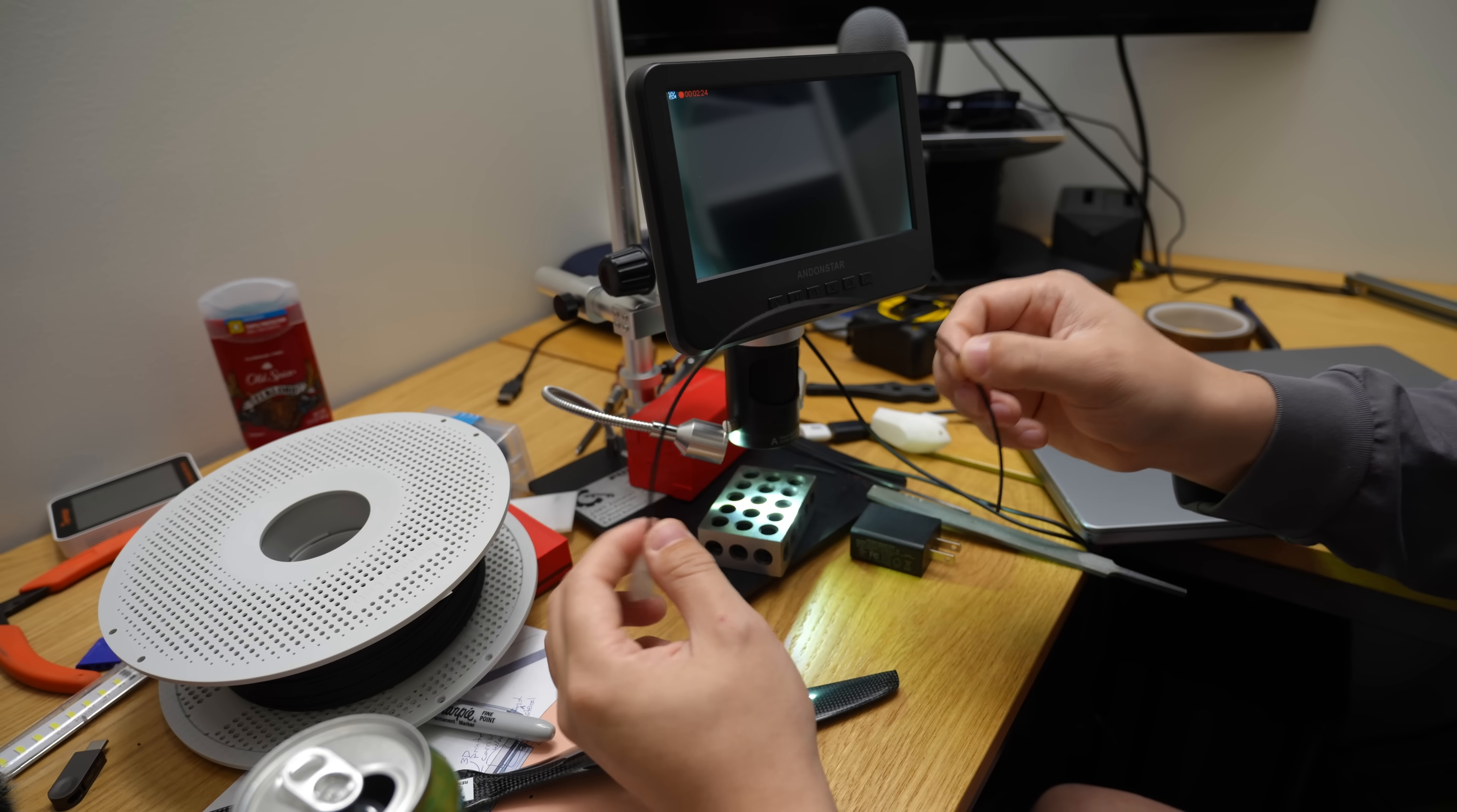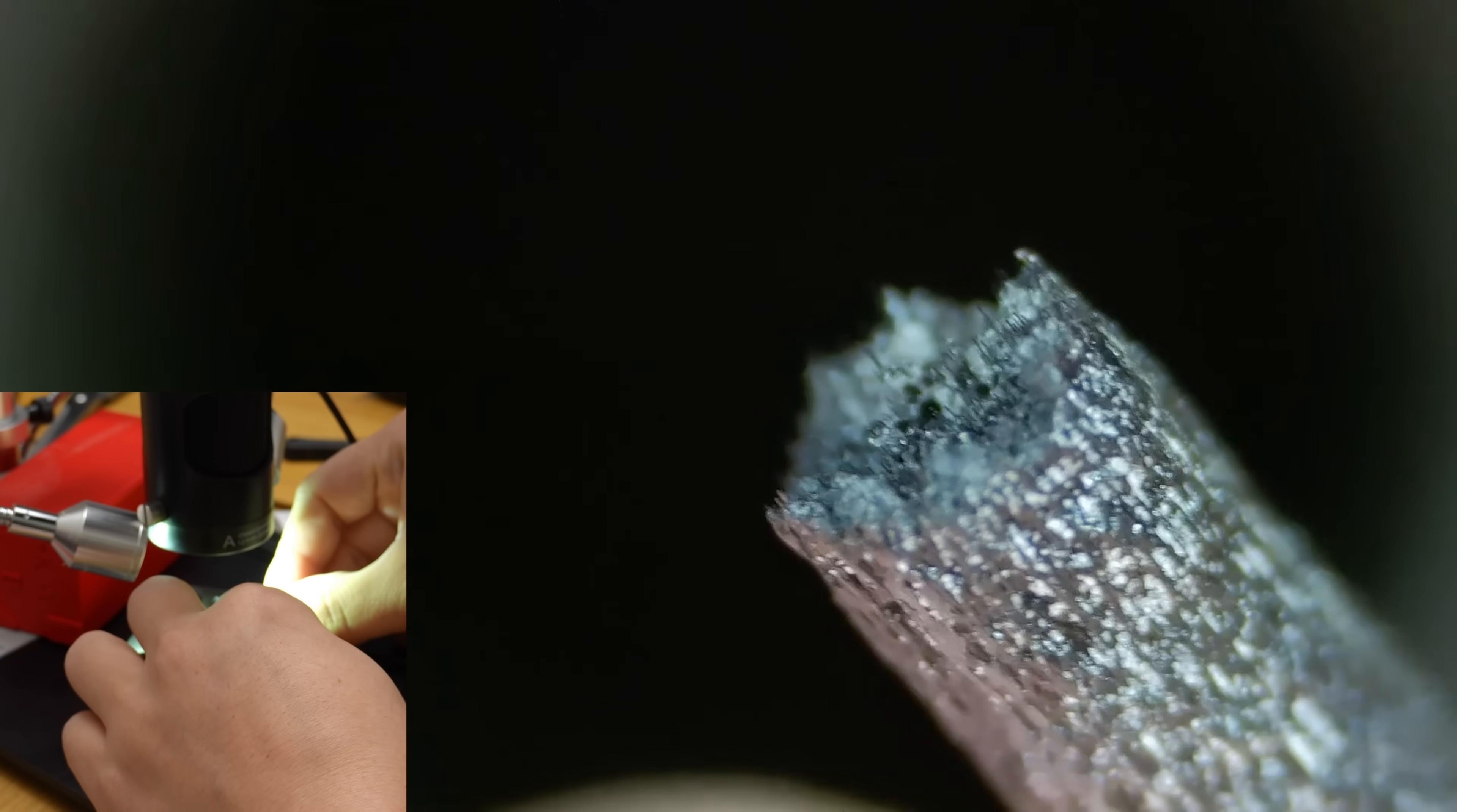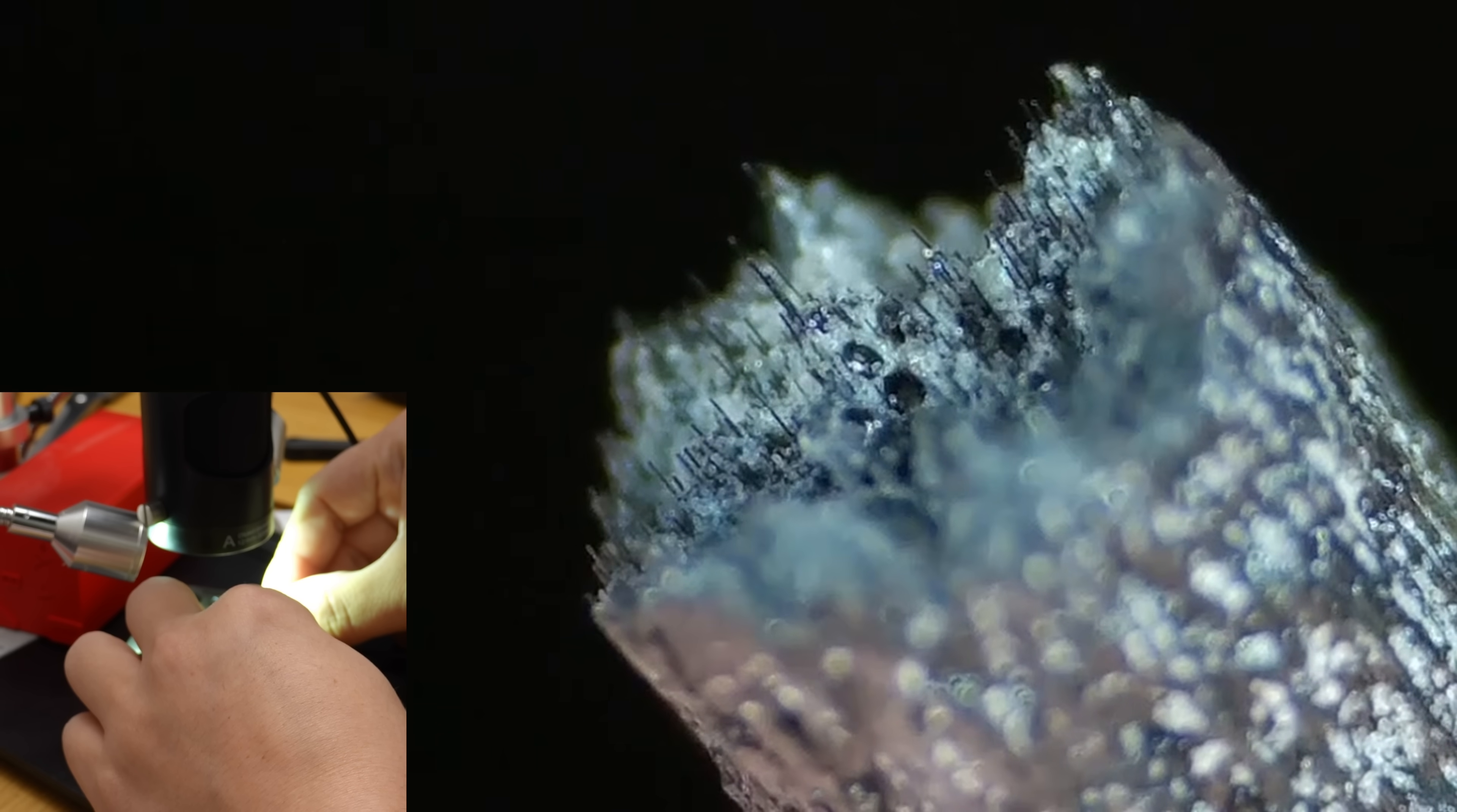I was kind of curious what carbon fiber filament looks like under the microscope, so let's take a closer look. If we look at a broken end of this filament, you can actually see the individual carbon fibers sticking out of the material. There's a bunch of bubbles on the inside too, which is kind of interesting.